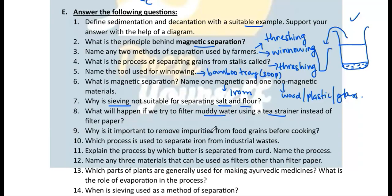Question 10: Why is it important to remove impurities from food grains before cooking? If you cook food grains without removing impurities, you will find stones and other impurities in your food, making chewing difficult, the food unpleasant, and unhealthy. Question 11: Which process is used to separate iron from industrial waste? Magnetic separation.